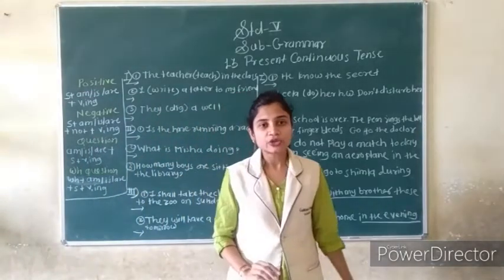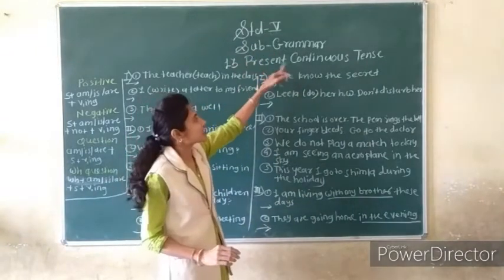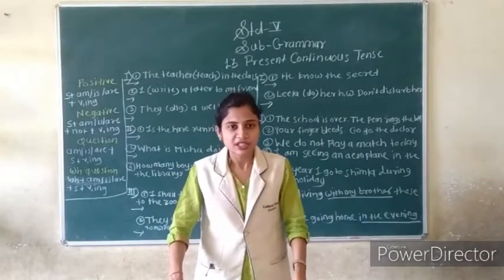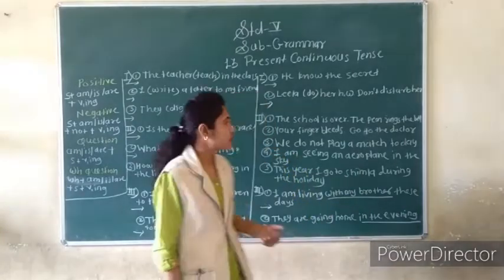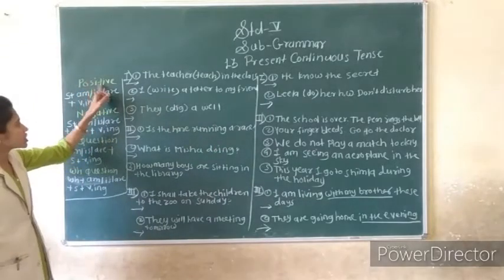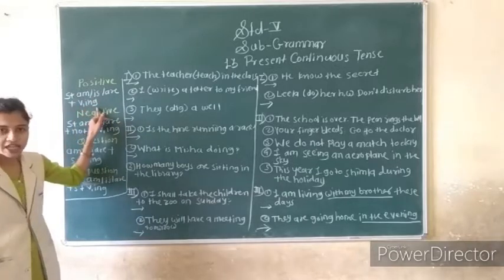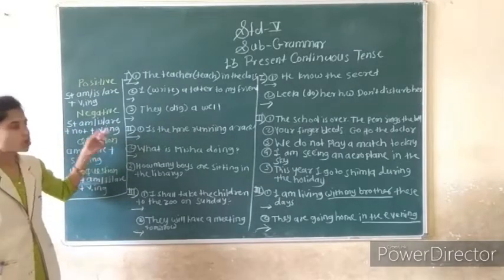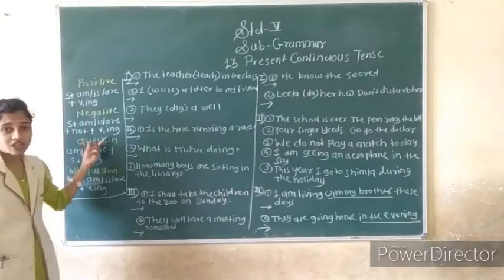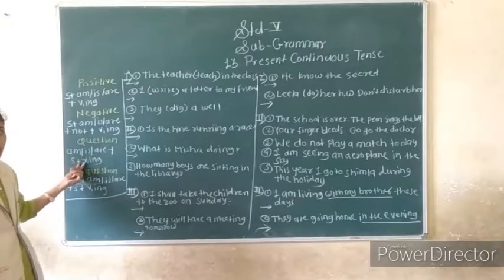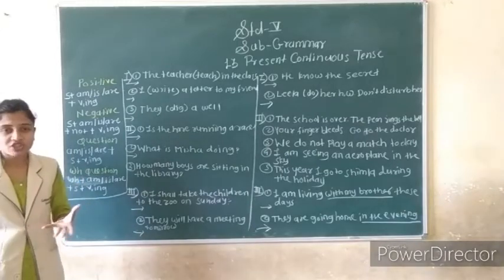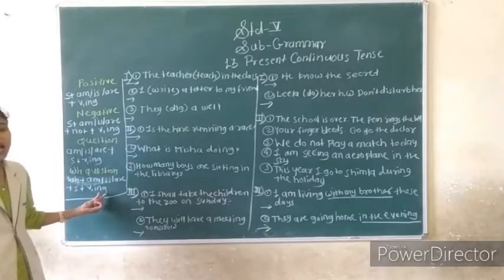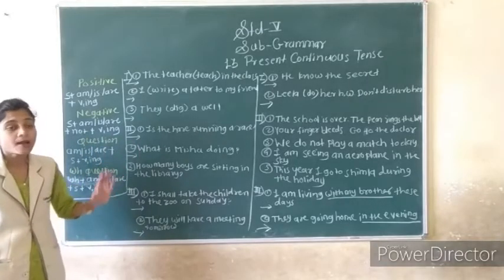Hello students, I am Agashna Ikre. Today we are going to start Standard 5th subject grammar, 13th lesson: Present Continuous Tense. After all the simple tenses we saw, now it is the present continuous tense. In present continuous tense, what is the formula? In the positive statement we use subject plus is/am/are plus verb+ing.